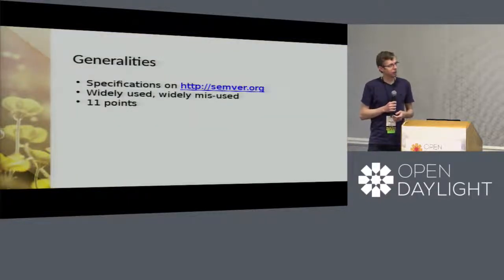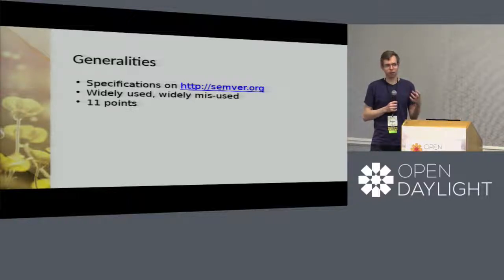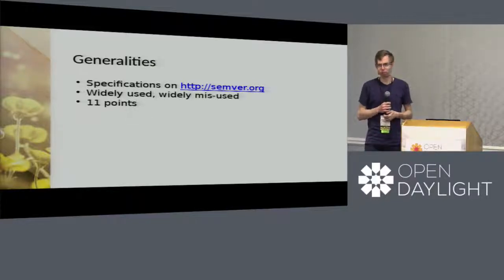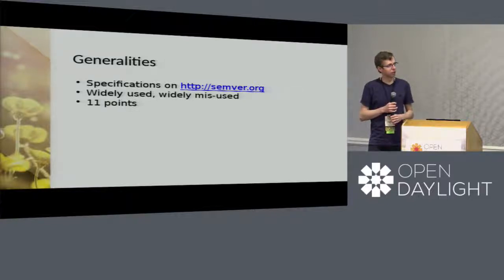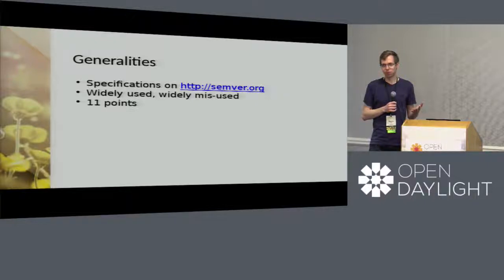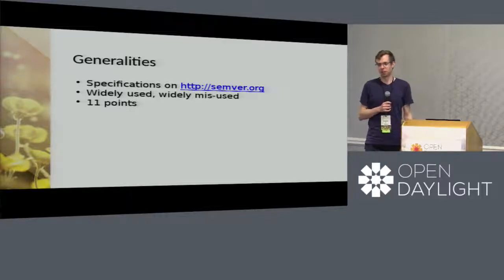Semantic versioning is a concept that means associating meaning with version numbers of software packages. There's a spec on semver.org, and the next 11 slides are just a retranscription of that spec. Most people agree that spec is a sensible definition of semantic versioning, but lots of people don't necessarily read all 11 points carefully, and it can end up being misused.